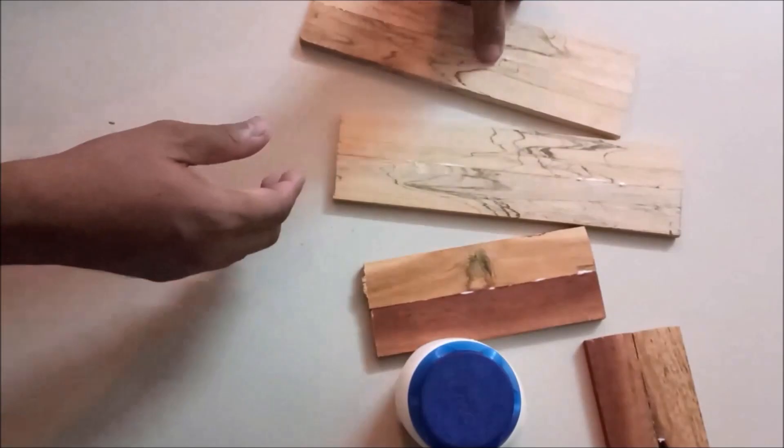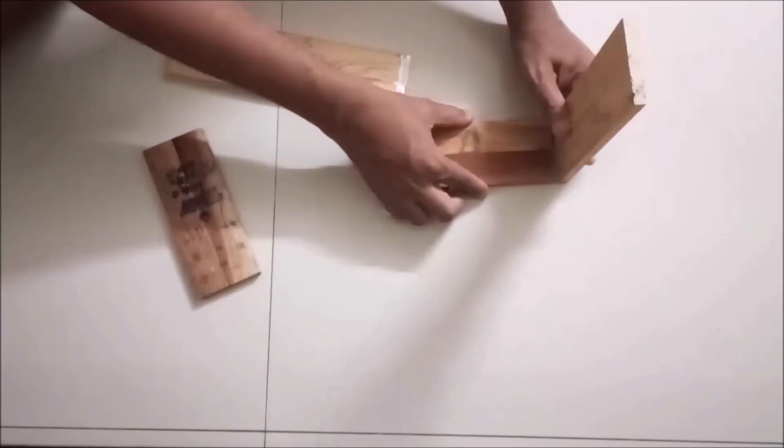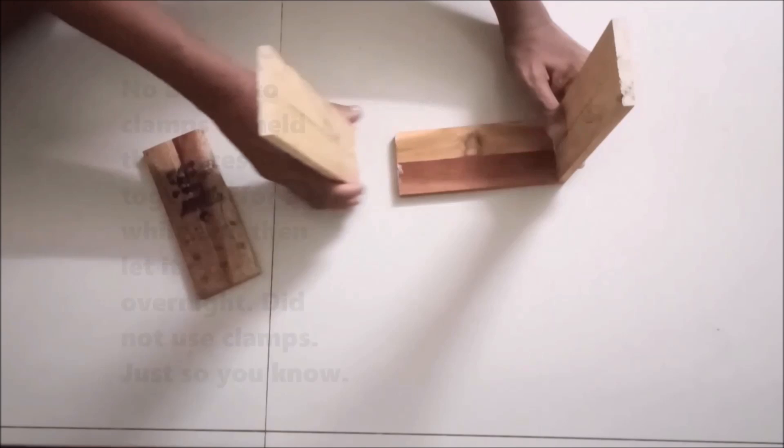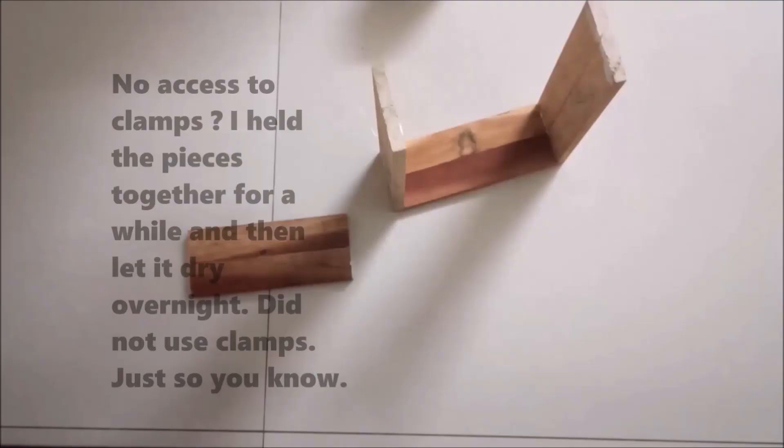Glue the four pieces of wood together at the edges to make the frame. It is recommended that you use clamps to hold the wooden pieces together for a stronger bond.